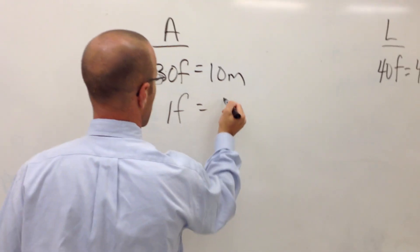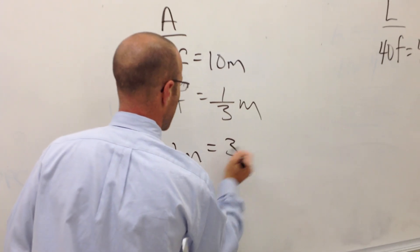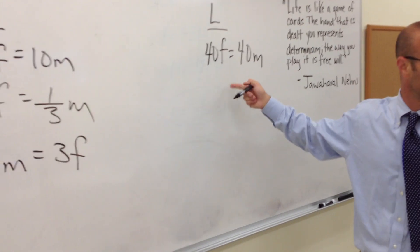Solving for one, I get 1F equals one-third M. 1M equals 3F. This one's hard, right?